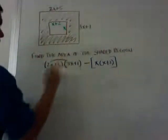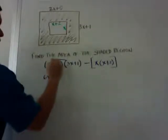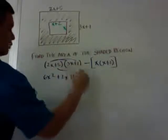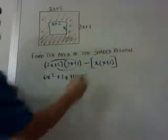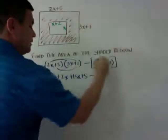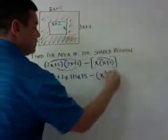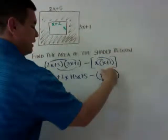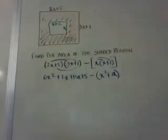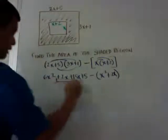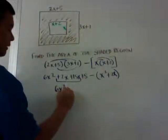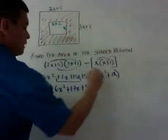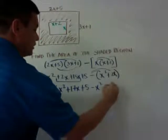So when I do my FOIL here, I get 6x squared plus 2x plus 15x plus 5. And notice I have the parentheses around it because I need to distribute the negative. Before I do that, I'm going to combine this, get 6x squared plus 17x plus 5.